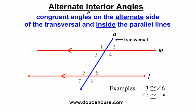The first angle relationship we're going to talk about is alternate interior angles. The definition I have my students write down: congruent angles on the alternate side of the transversal and inside the parallel lines. The word 'alternate' is also in the definition, and 'interior' - like the interior of my house - means the inside. So we're looking for angles that are inside the parallel lines. If I look just on the inside of the parallel lines, angles one, two, seven, and eight are eliminated.